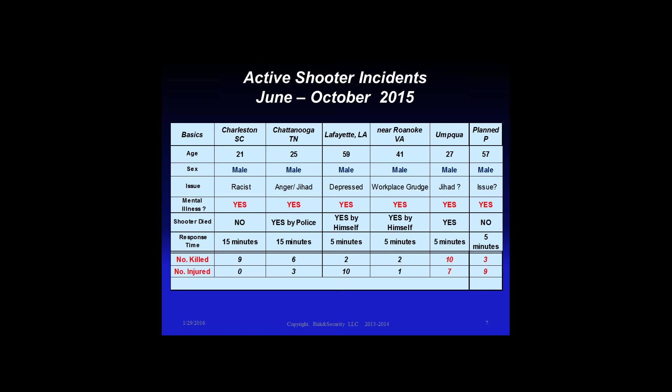The Planned Parenthood shooter — when you see his eyes you just wonder. They probably all had some kind of mental illness. Looking at outcomes: the youngest shooter turned himself in to police after shooting nine people. In Chattanooga the shooter went through, shot four Marines and a petty officer, and as he walked out the back door reloaded to go back in — that's when the Chattanooga sheriff's car pulled up and killed him. In Lafayette the shooter saw police coming and shot himself. In Roanoke he got in a car, drove down the road, and killed himself.